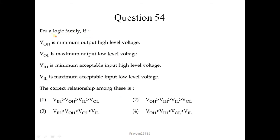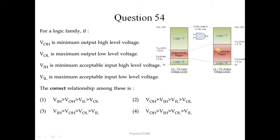Question number 54. For a logic family, VOH is the minimum output high level voltage, VOL is the maximum output low level voltage, VIH is the minimum acceptable input high level voltage, and VIL is the maximum acceptable input low level voltage. To remember the correct relationship, consider that at high level the output voltage is maximum — so VOH is greater than VIH, then VIL, then VOL. So the first option is the correct answer.